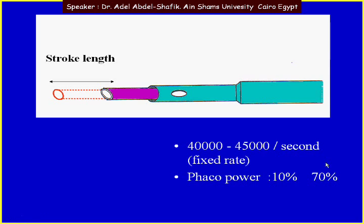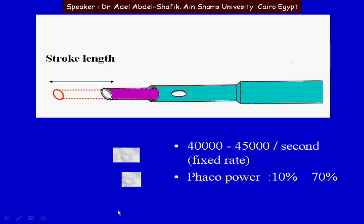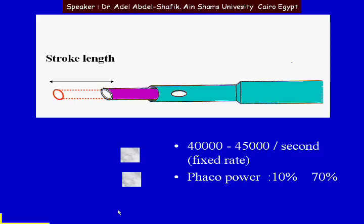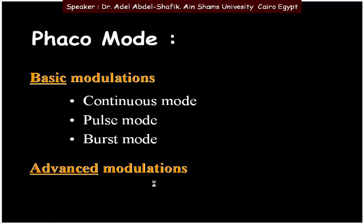Each machine has a fixed rate of vibration. The tip of the phaco needle can vibrate forward and backwards at a fixed rate for each machine. When we choose a power of 10 or 70%, we change the stroke length. At high powers like 70 or 80%, we get a long stroke length; at low powers like 10%, we get a short stroke length. We can modify the amount of power by choosing a certain percentage, and for each percentage we change the stroke length.